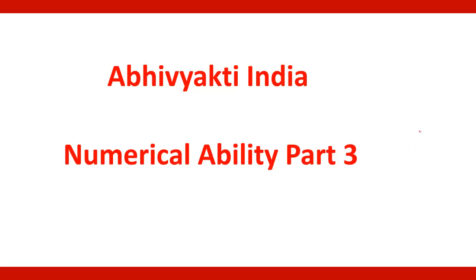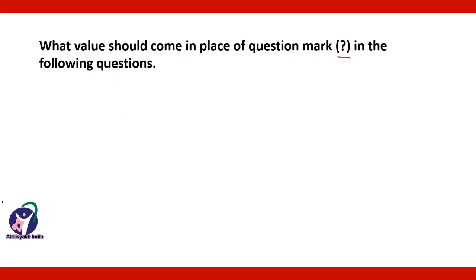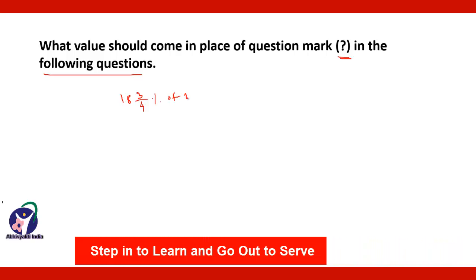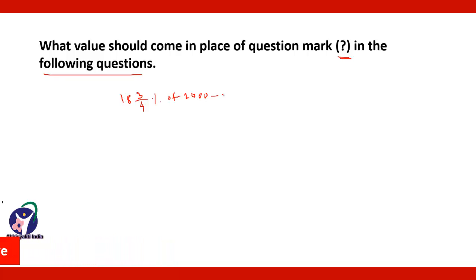The first question is: what value should come in place of the question mark? The question is 18¾% of 2000 plus 33⅓% of 972 is equal to question mark.